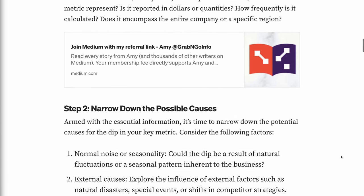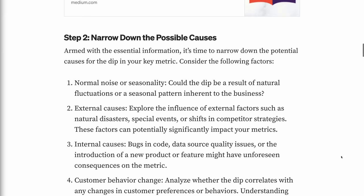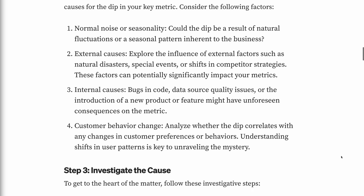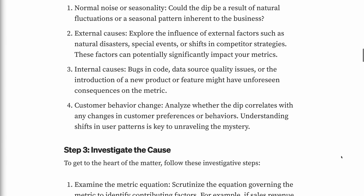Step 2: Narrow down the possible causes. Armed with the essential information, it's time to narrow down the potential causes for the dip in your key metric. Consider the following factors. First, normal noise or seasonality — could the dip be a result of natural fluctuations or a seasonal pattern inherent to the business? Second, external causes — explore the influence of external factors such as natural disasters, special events, or shifts in competitor strategy, as these can potentially significantly impact your metrics.